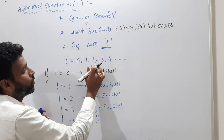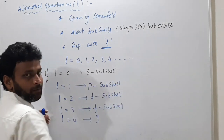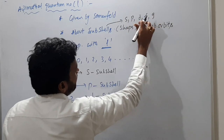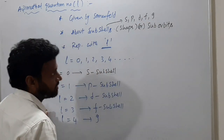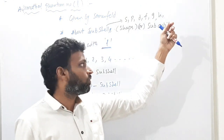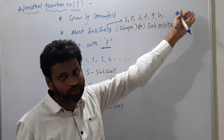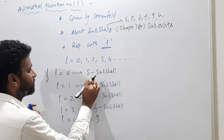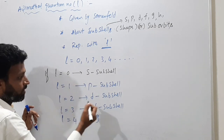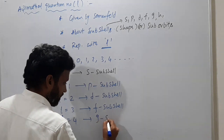L takes the values 0, 1, 2, 3, 4, and so on. If l = 0, the subshell is called S. If l = 1, it is P. If l = 2, it is D. If l = 3, it is F. If l = 4, it is G subshell. These values are important because without knowing them we cannot determine the energy of subshells, and without that we cannot understand electronic configurations.